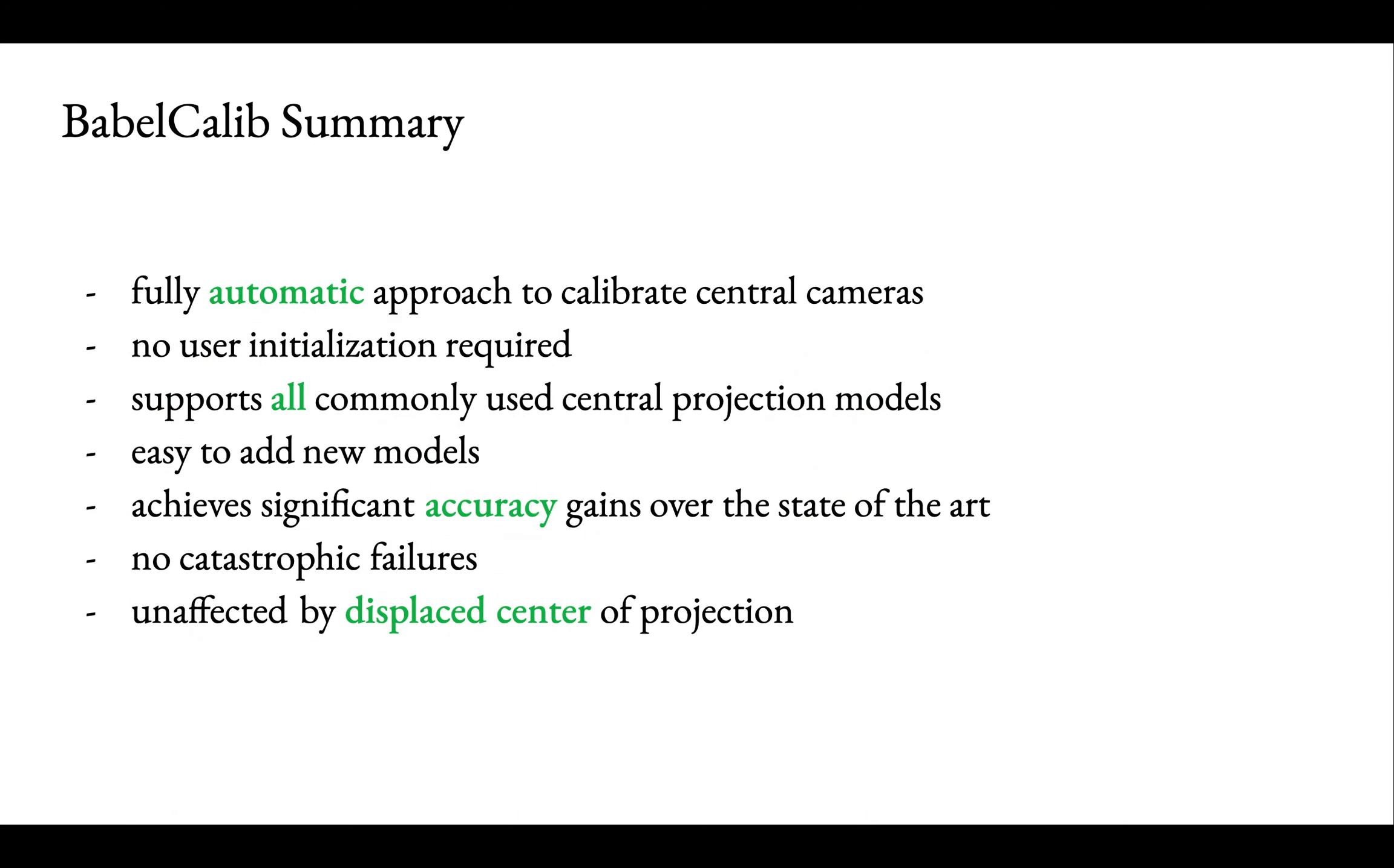In this work, we proposed a fully automatic approach to calibrate central cameras, which doesn't require manual initialization. It supports all commonly used central projection models, and the regression framework easily admits new models. The method outperforms three widely used calibration frameworks and suffers no catastrophic failures on a large survey of cameras. In addition, the method is unaffected by a displaced center of projection.